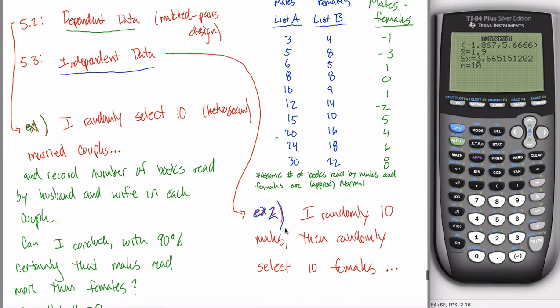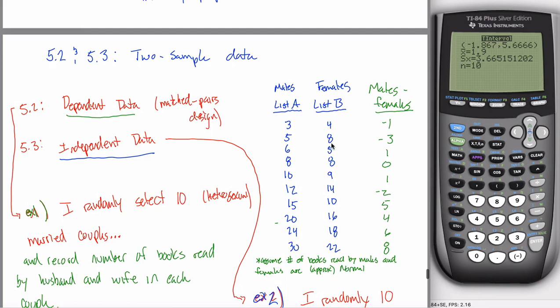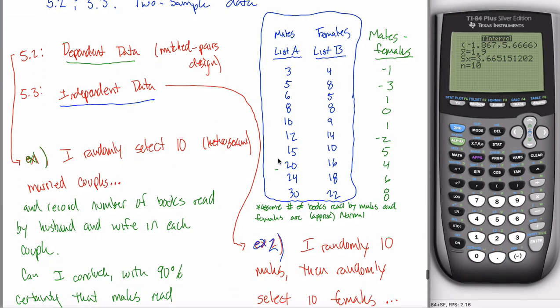In fact, when you have independent data, like we will in this example, you can't subtract them. You can't change your two lists of data into a single list. We're going to have to study lists one and two, I think is where we put this data last time, by themselves, as opposed to putting them together in some sense, subtraction, to changing it into one set.